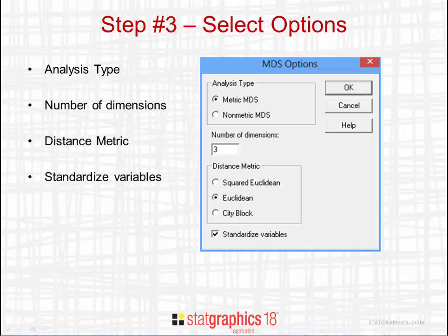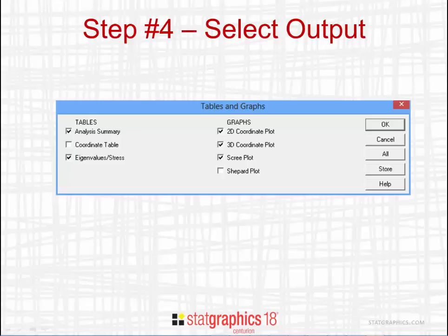If you're calculating distances, you need to tell the program whether or not to standardize the variables. Standardizing means subtracting the sample mean and dividing by the sample standard deviation for each variable. If you have variables with different units, as I have here, you'll definitely want to standardize. Once you select the options, you can pick the tables and graphs to display — I'm particularly interested in the coordinate plots, which map individual observations, and the scree plot, which helps judge how many dimensions are needed.